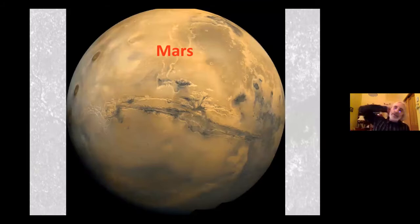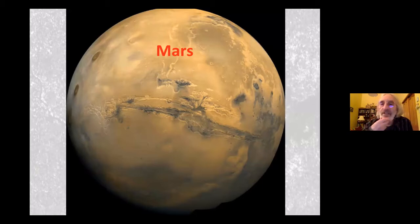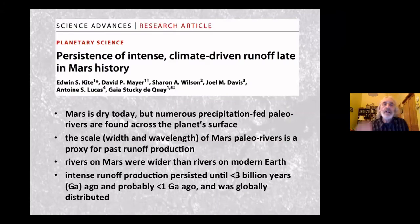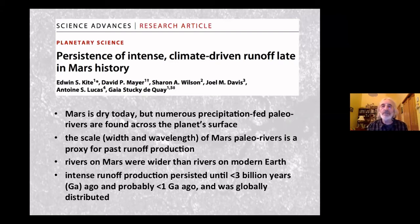Now, Mars. When we talk about Mars, Titan, and Venus, there's a lot less evidence and a lot more interpretation. A recent paper published in Science discusses the persistence of intense, climate-driven runoff late in Mars history. There's been some controversy about how channels formed, but this paper proposes a precipitation-fed source for the rivers examined. Mars is dry today, but they believe numerous precipitation-fed paleo rivers are found across the planet surface, with channel width and meander wavelength used as proxies for past runoff.